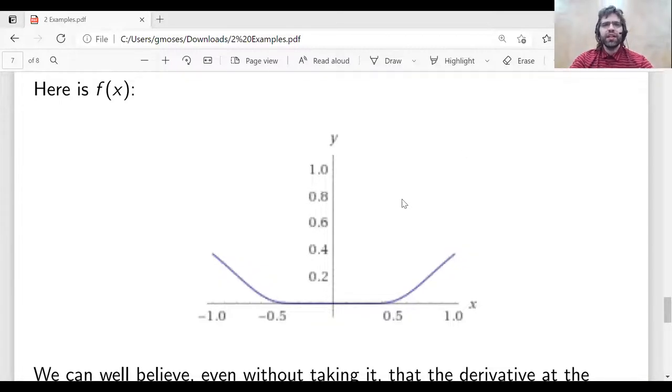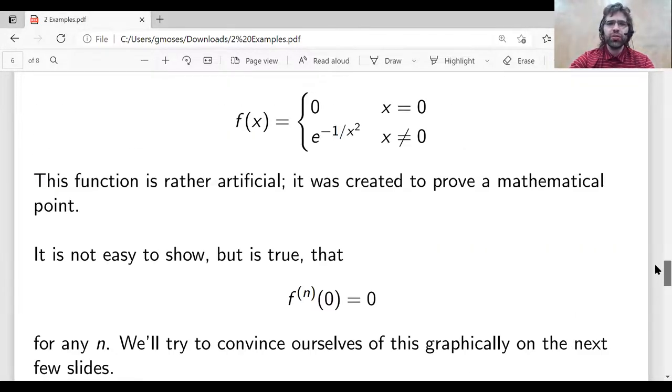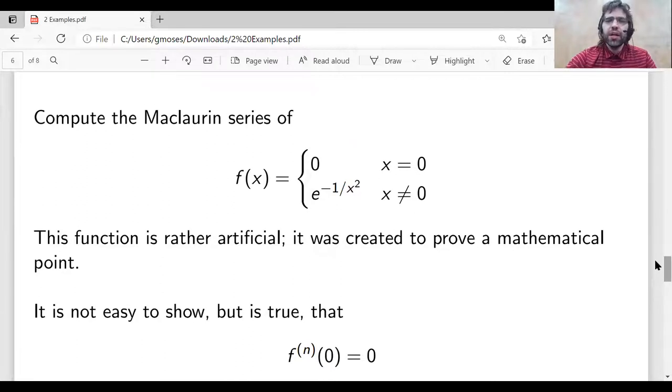We have to create a kind of artificial example if we want to see an example where they don't. So let's pick the example that's in the notes. Let me go ahead and share this screen. It's a piecewise defined function. f of x equals 0 when x equals 0, and e^(-1/x²) when x is not equal to 0.